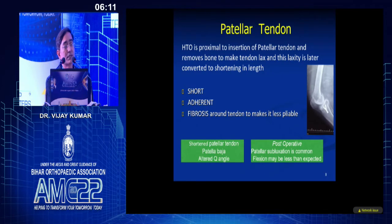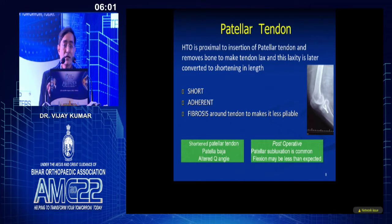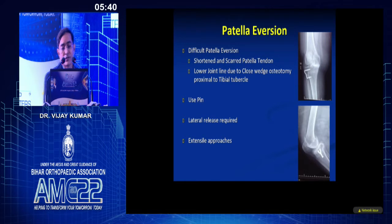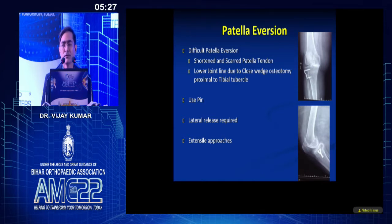Once you are inside, the patellar tendon is often short and adherent because the HTO is proximal to it. The tissue is very fibrous, making it very difficult to evert the patella due to the shortened patellar tendon and patella baja. The Q angle is altered, and post-operatively these patients are predisposed to patellar subluxation, with flexion often less compared to a normal TKR. For difficult patellar eversion, you might use a pin, evert the tibial tubercle, do a lateral release, use a tibial tubercle osteotomy, or perform a quadriceps snip — you should be ready for all of these.